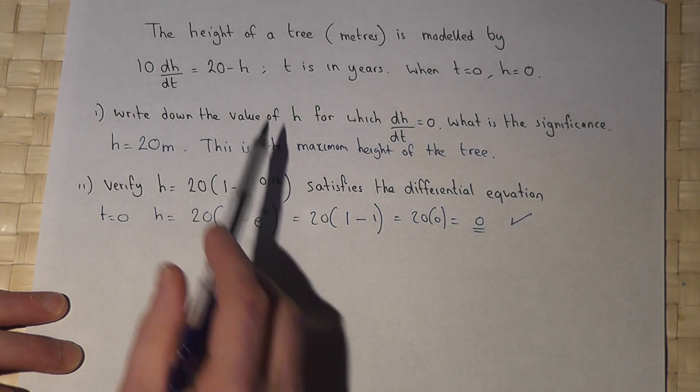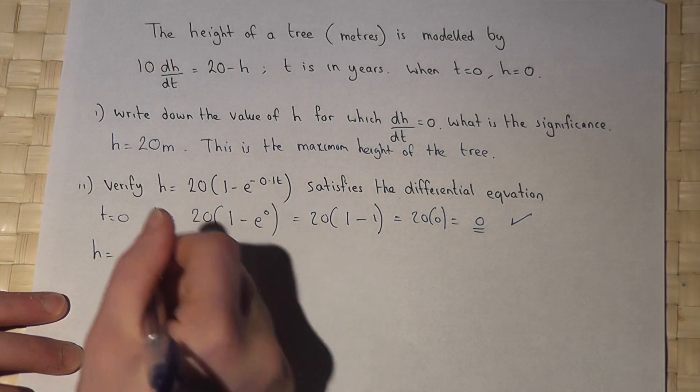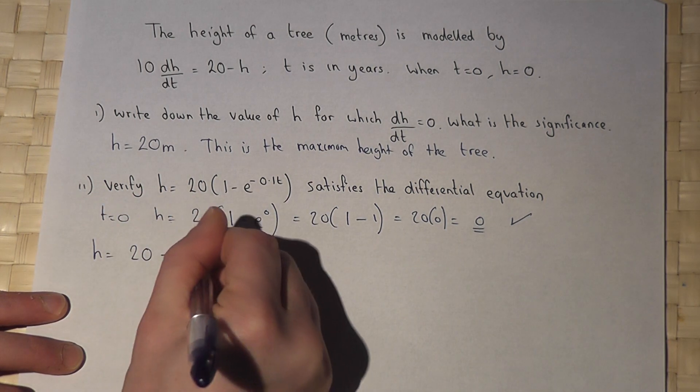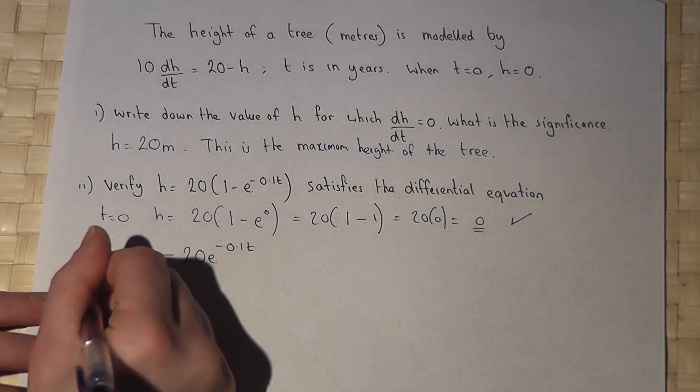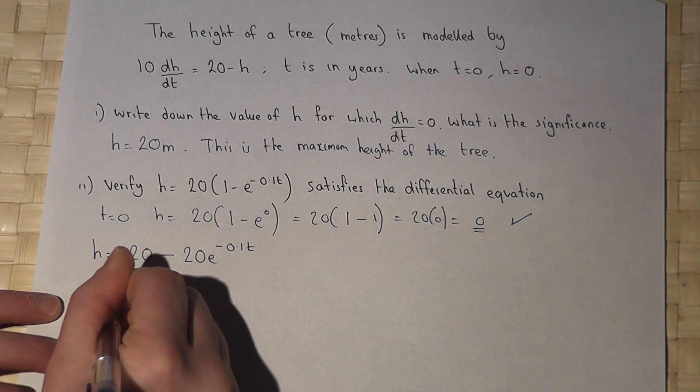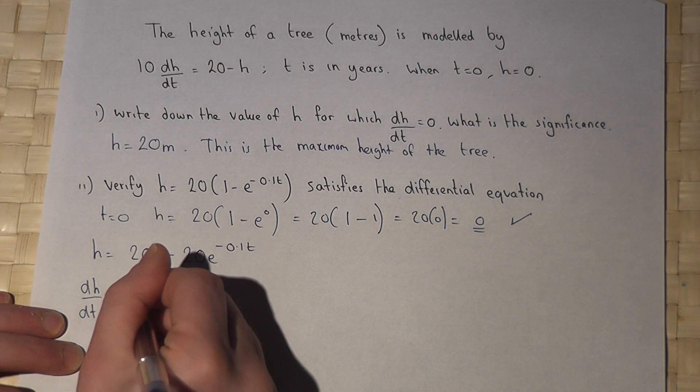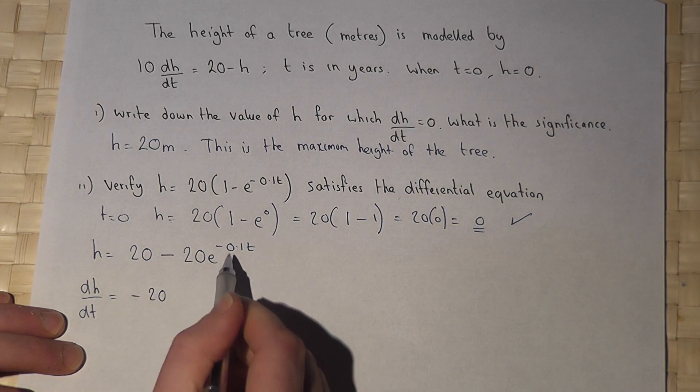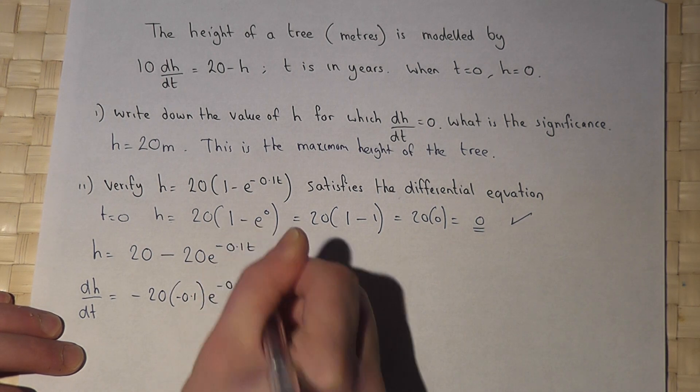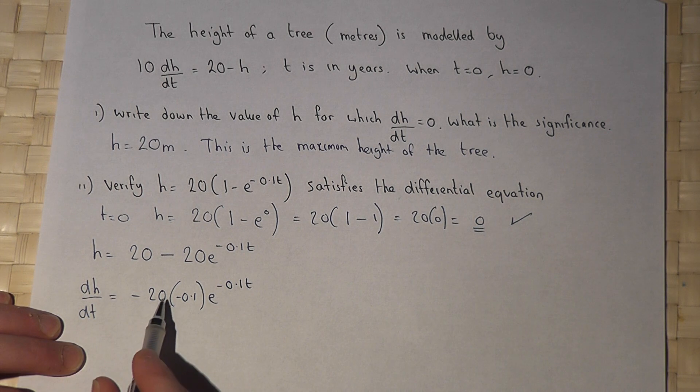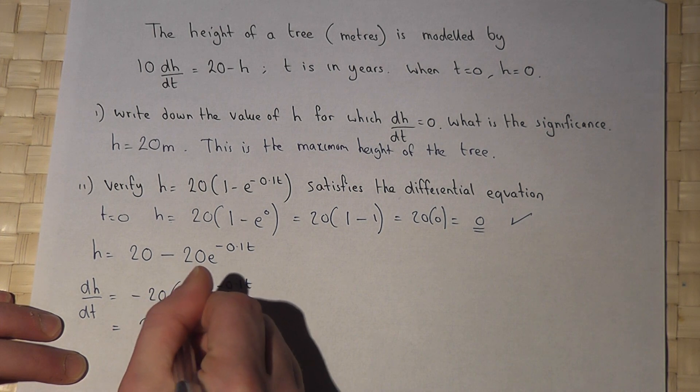But does this actually satisfy the differential equation? h equals, we'll expand the bracket, 20 take away 20e to the minus 0.1t. If I now find dh by dt, 20 differentiates to zero. But this differentiates to minus 20. We times by minus 0.1 and then keep the exponential the same.